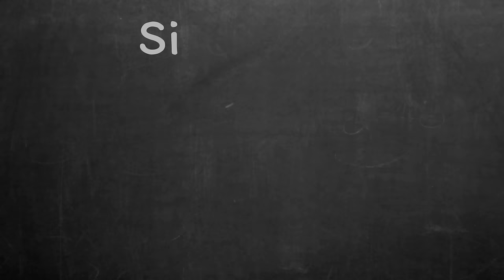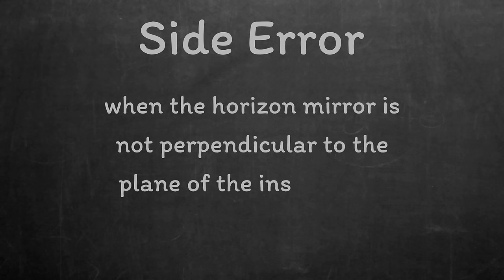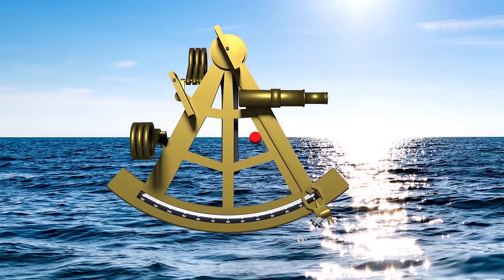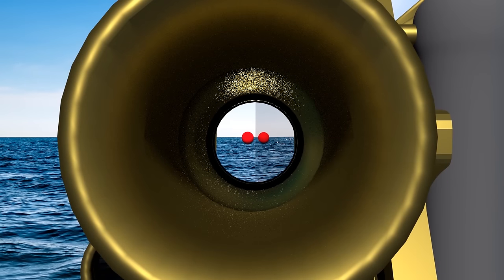Next we're going to move on to side error. This is similar to the last error that we looked at but it's for the horizon mirror instead. So side error is when the horizon mirror is not perpendicular to the plane of the instrument. You can spot side error when the instrument is set at zero and you look at an object in the distance. If the real object and the reflected object are separated, side error is present.